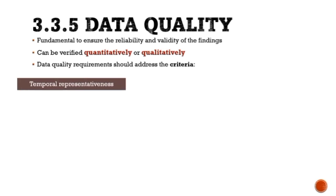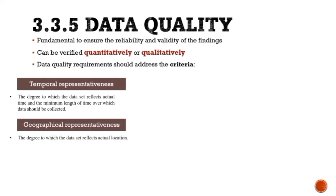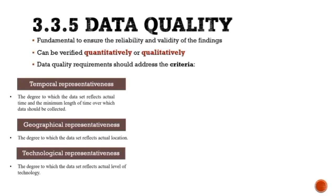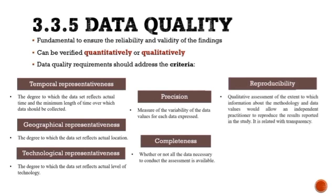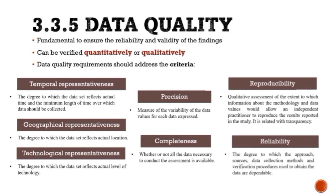The degree to which the data set reflects actual time and the minimum length of time over which data should be collected. Geographical representativeness: The degree to which the data set reflects actual location. Technological representativeness: The degree to which the data set reflects actual level of technology. Precision: Measure of the variability of the data values for each data expressed. Completeness: Whether or not all the data necessary to conduct the assessment is available. Reproducibility: Qualitative assessment of the extent to which information about the methodology and data values would allow an independent practitioner to reproduce the results reported in the study. It is related with transparency. And last one reliability: The degree to which the approach, sources, data collection methods and verification procedures used to obtain the data are dependable.